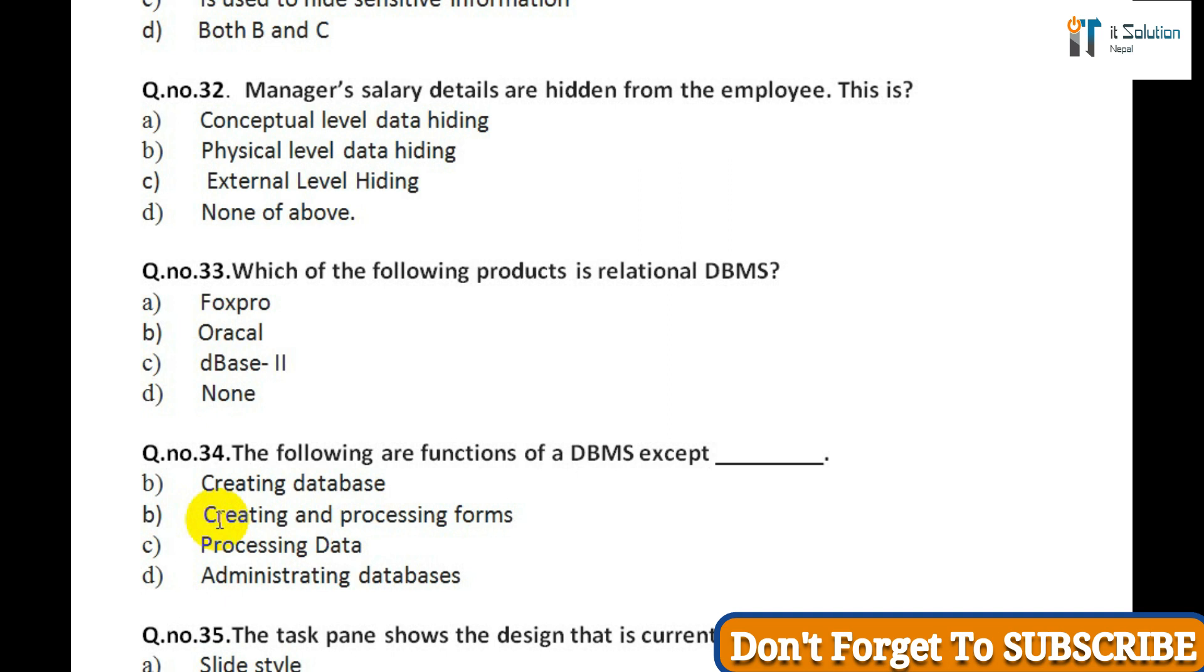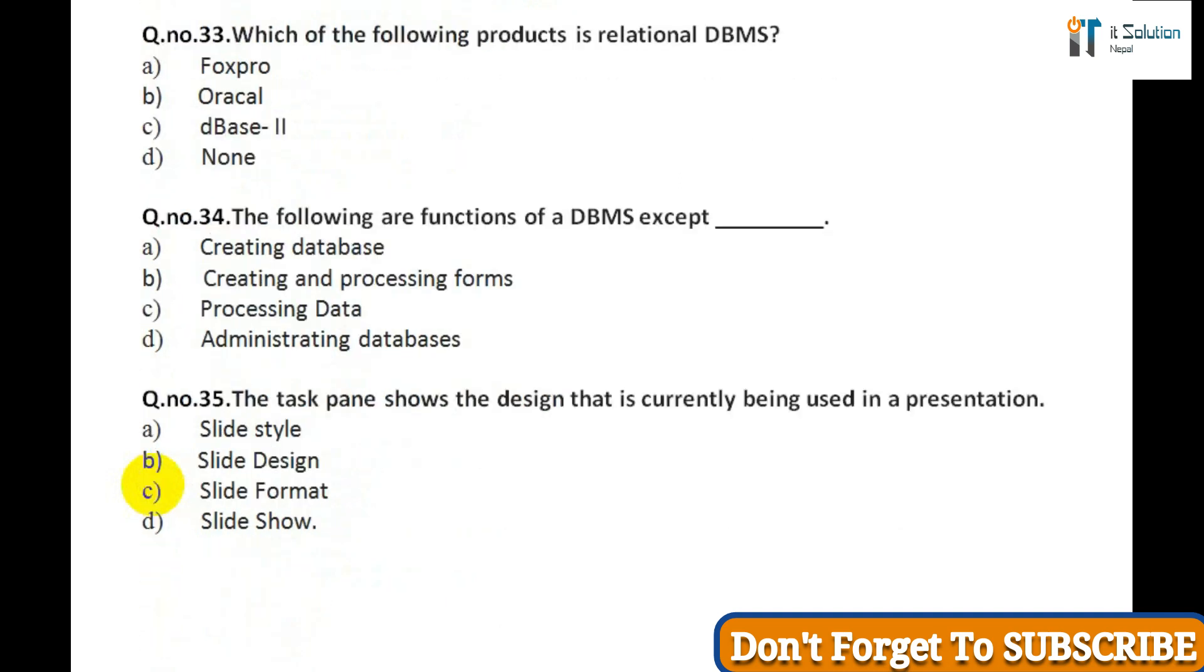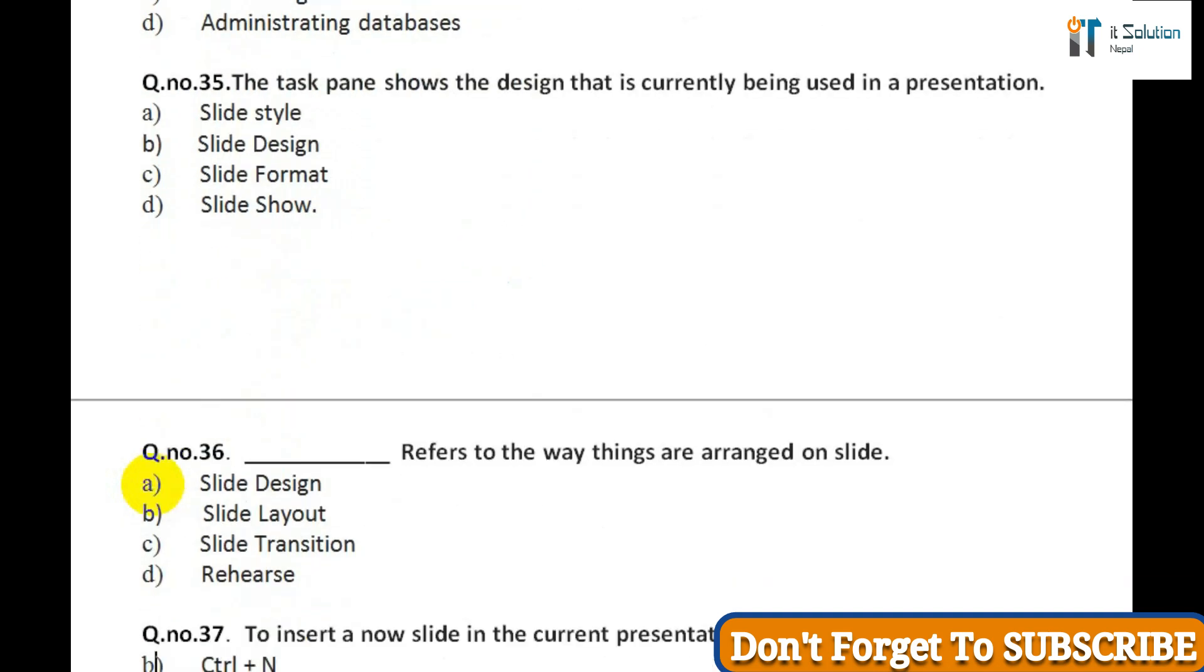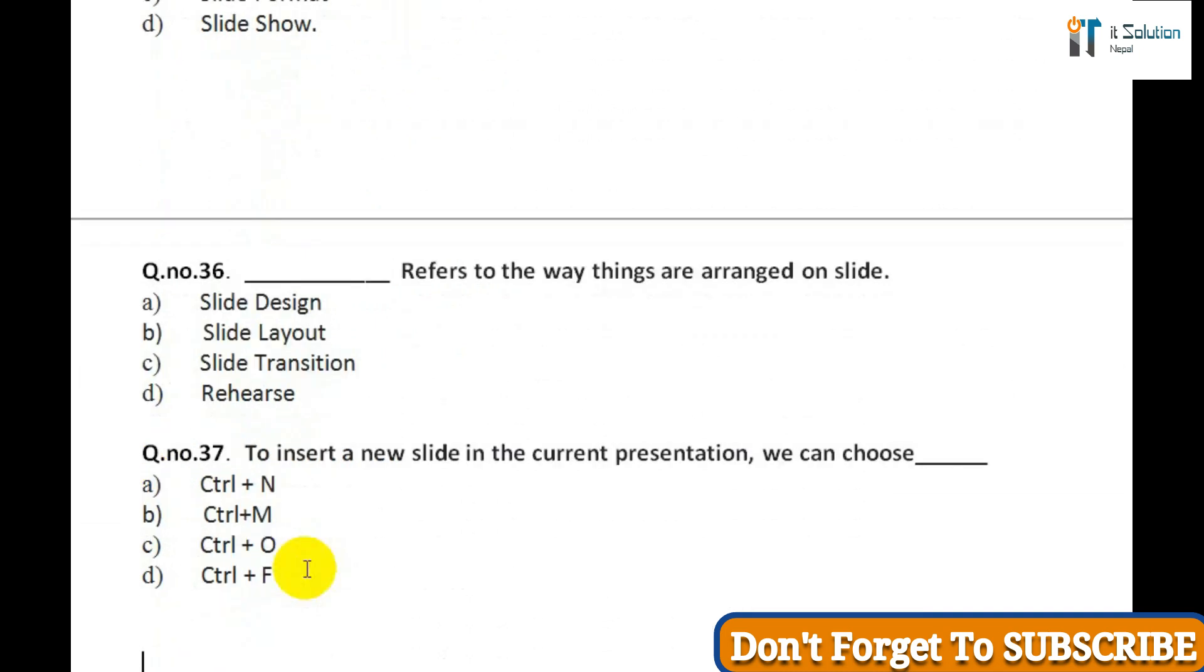Question twenty-nine: Each Excel file is called a workbook because: A) It can contain text and data, B) It can be modified, C) It can contain many sheets including worksheets and chart sheets, D) You have to work hard to create it. Question thirty: The master list of an indexed file: A) Is not sorted in ascending order, B) Contains one list of key and record numbers, C) Is sorted in ascending order, D) Both B and C. Question thirty-one: A locked file can be: A) Accessed by only one user, B) Modified by users with the correct password, C) Is used to hide sensitive information, D) Both B and C.